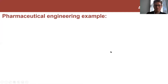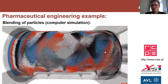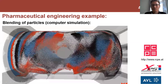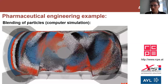What you see in this video is a blender - a particle blender. You see 400,000 particles in this computer simulation, and it helps us understand how long we have to mix the powder or powder mixtures, and whether we actually get the homogeneity we want in the end.